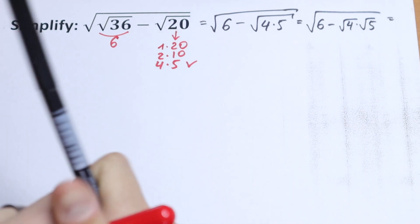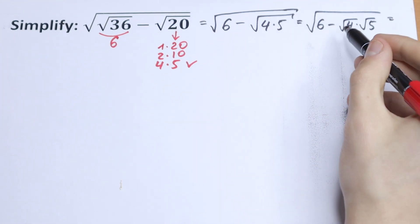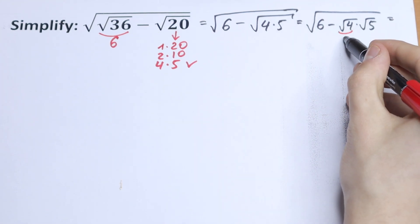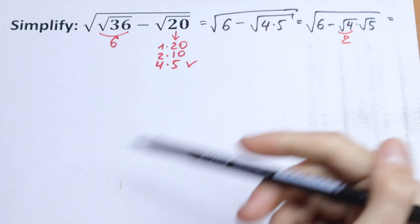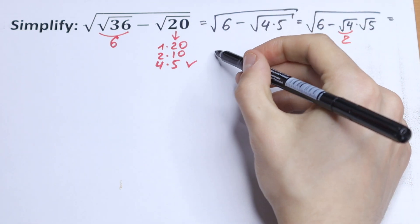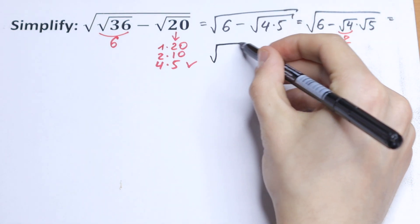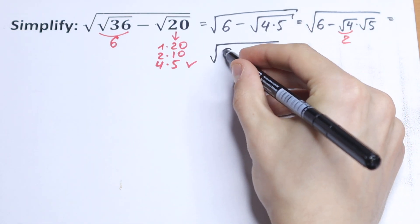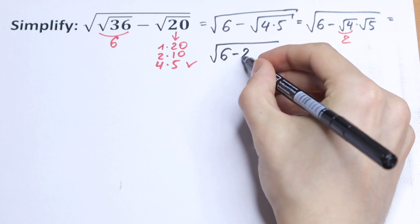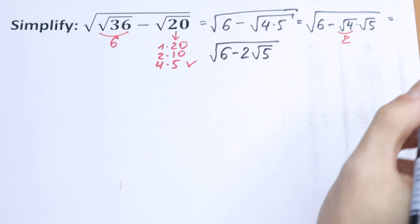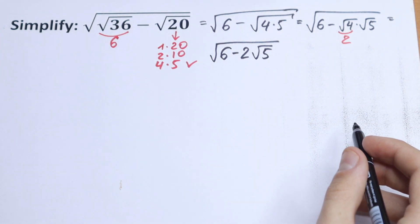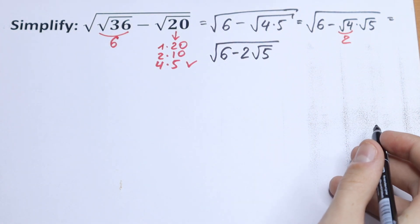We know that the square root of 4 is equal to 2. So as a result, we will have the square root of 6 minus 2 times the square root of 5. What are we going to do next?